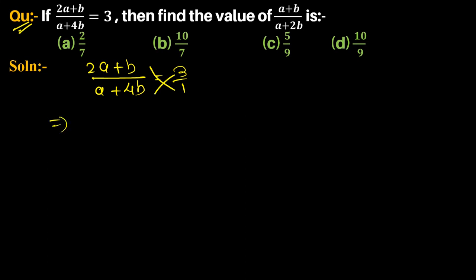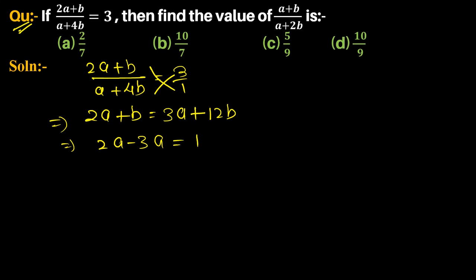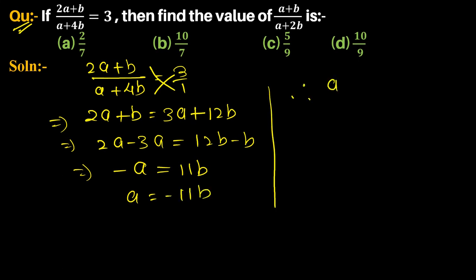After cross multiplication we get 2a + b = 3a + 12b, so 2a - 3a = 12b - b, so -a = 11b, therefore a = -11b.